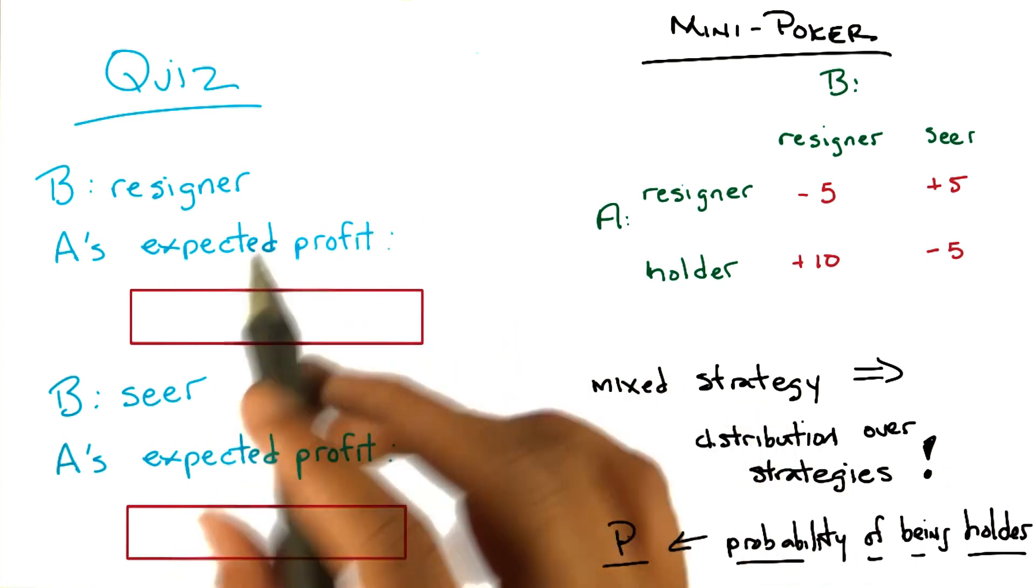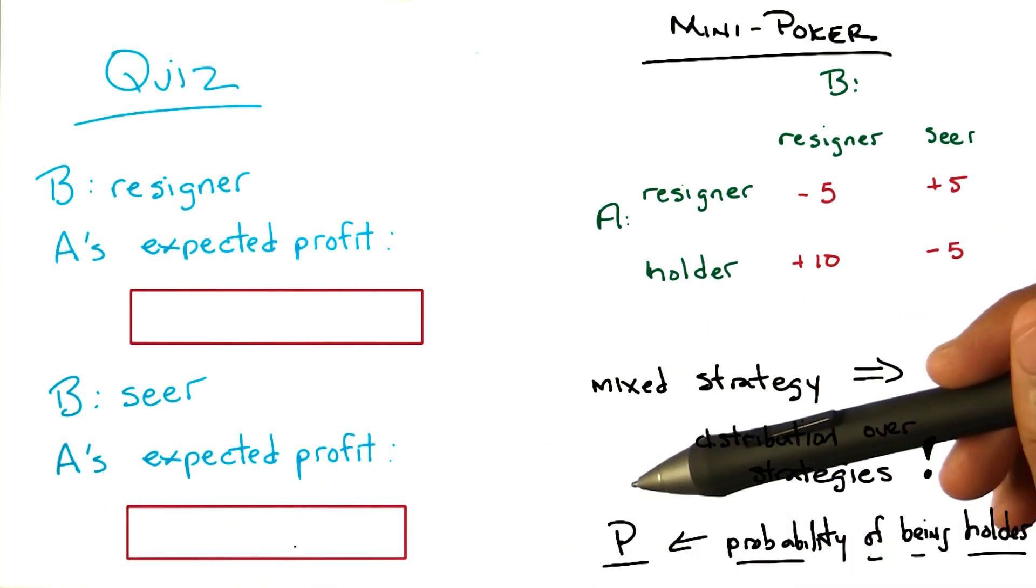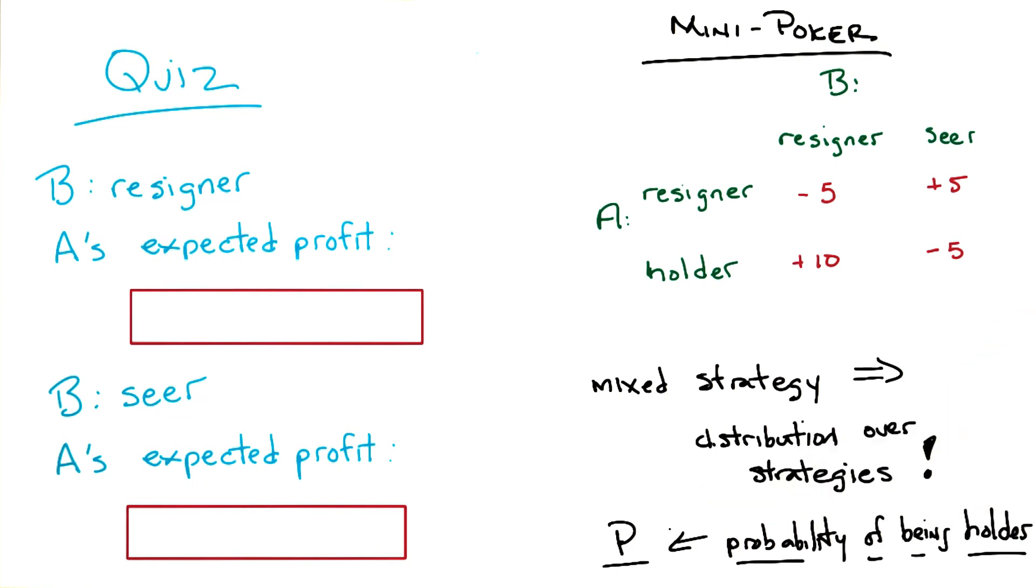I want you to decide in a world where B is a seer, B always chooses to see the card, what would A's expected profit be in a world where A will choose to be a holder with probability P? Okay? Hm. Got it?